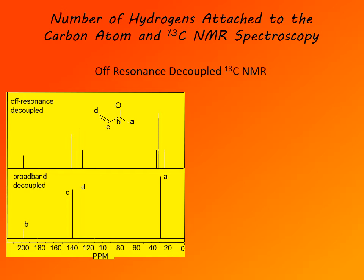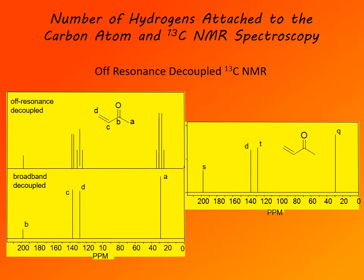Splitting of a signal in carbon-13 NMR is due to hydrogens directly attached to that carbon atom, and the same pattern is followed as before: multiplicity of a signal is N+1, where N is the number of hydrogens attached to carbon. Frequently, we don't plot the two spectra one on top of the other. Instead, we plot the broadband decoupled spectrum and indicate multiplicity next to each signal — Q for quartet for the methyl group, T for triplet for the CH2, D for doublet for CH, and singlet for the carbonyl carbon at around 200 ppm.